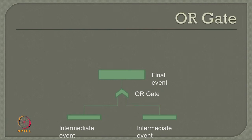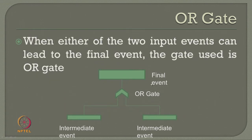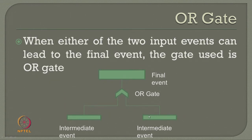Alternatively, there is an OR gate indicated by an arrow structure. With two events A and B as intermediate events, if this is an OR gate, it means either one of them is responsible to create the final event. So either A or B should be present to make the final event occur. When either of the two input events can lead to the final event, one uses an OR gate.